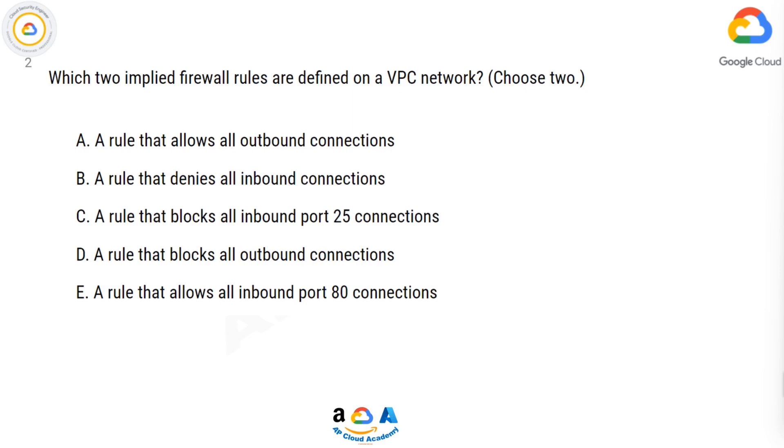Which two implied firewall rules are defined on a VPC network? Choose two.